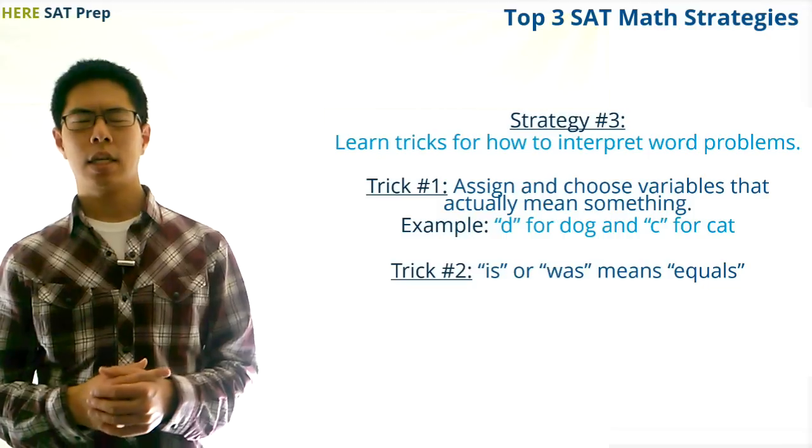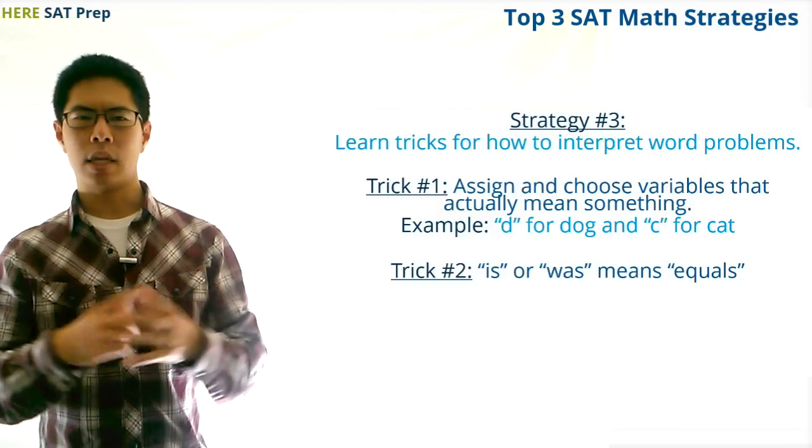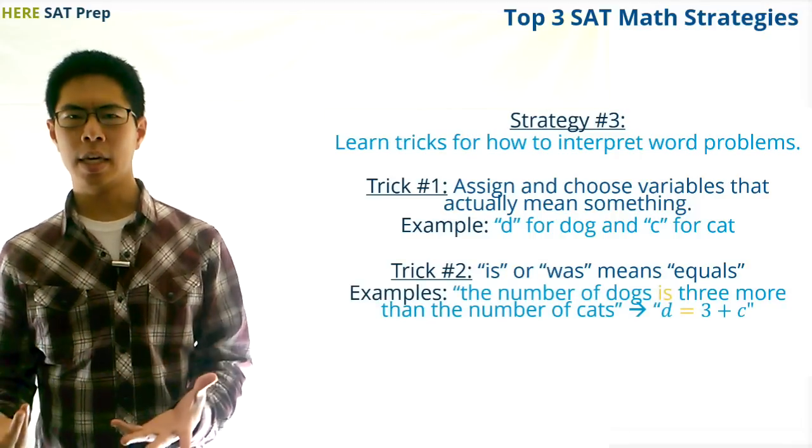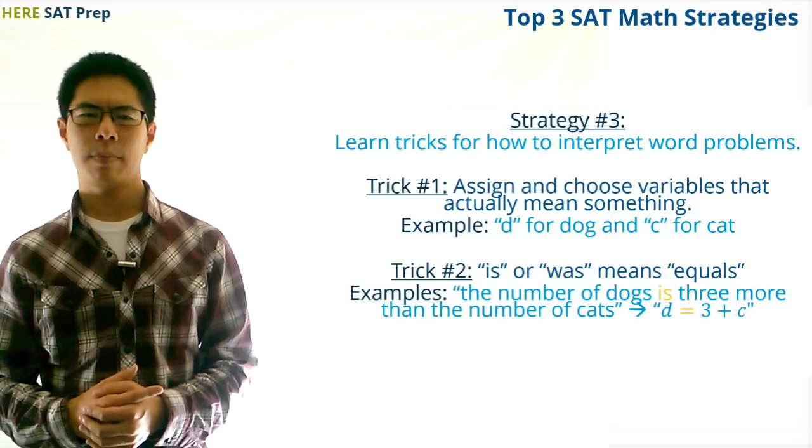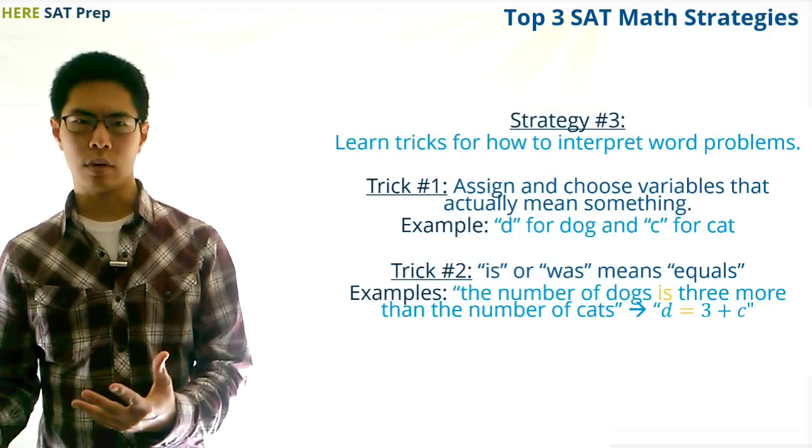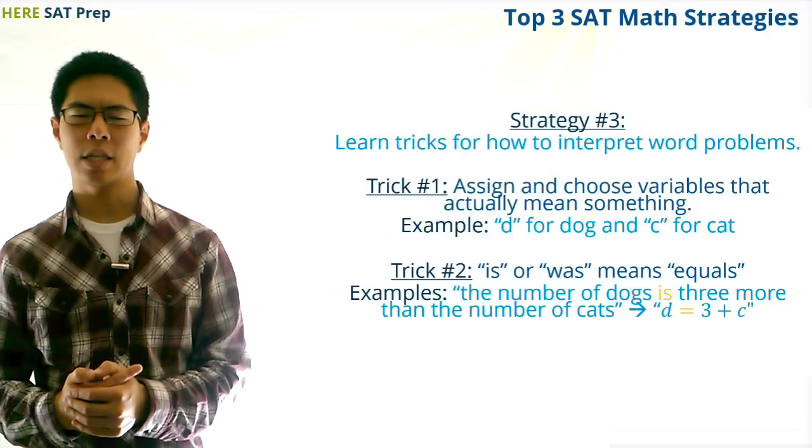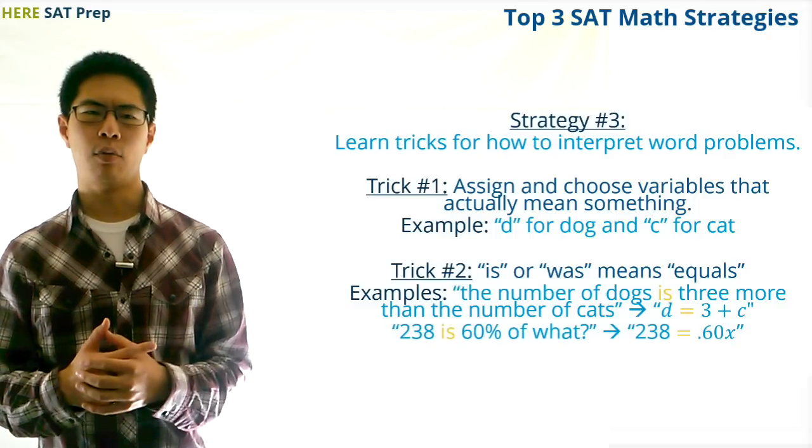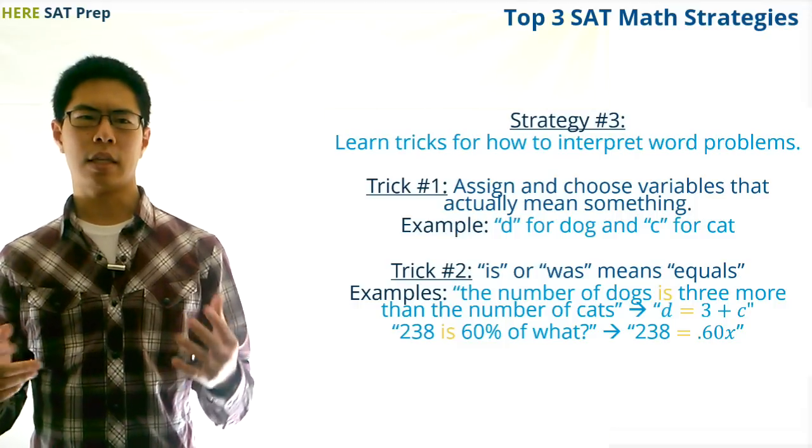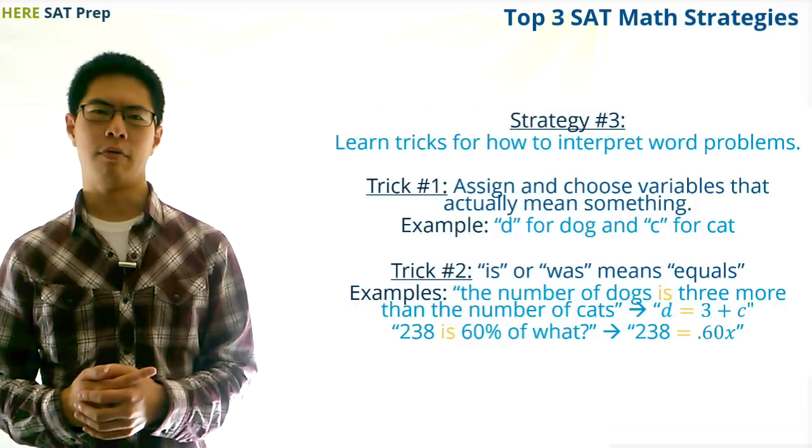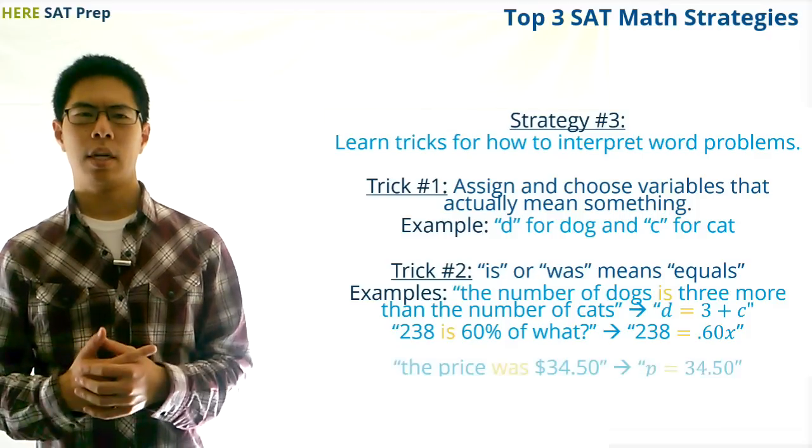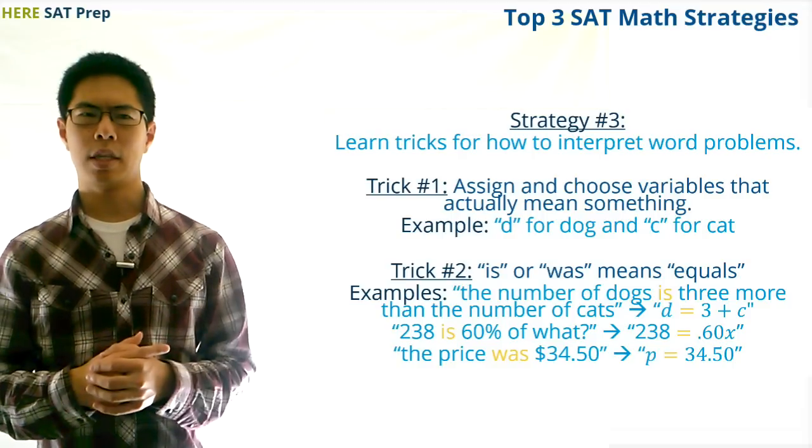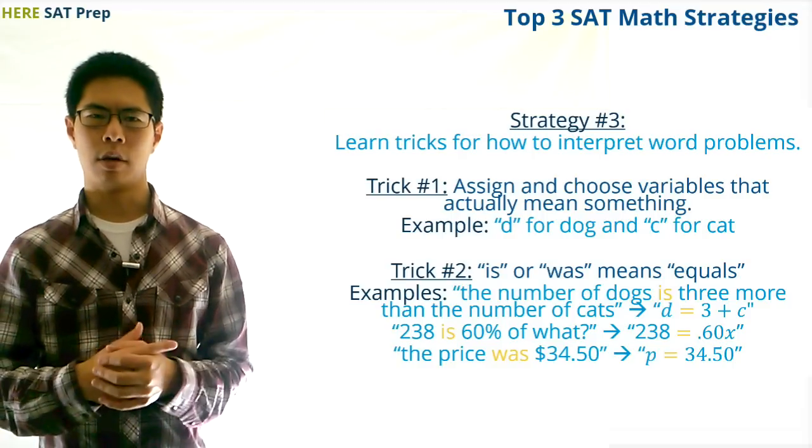Second, one of the key things to recognize is that the word is or was basically means equals. For example, if a problem says the number of dogs is three more than the number of cats, we would interpret this as the number of dogs equals three more than the number of cats. Or if the problem says 238 is 60% of what? Then we would interpret this as 238 equals 60% of what? Here's one more example. If the problem says the price was $34.50, then we would interpret this as the price equals $34.50.